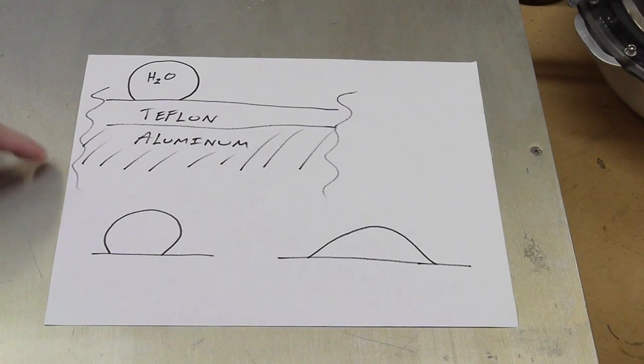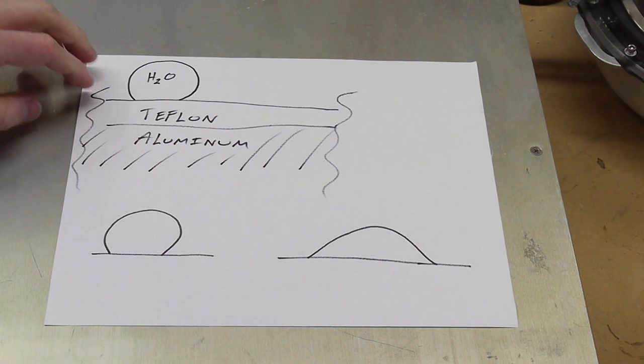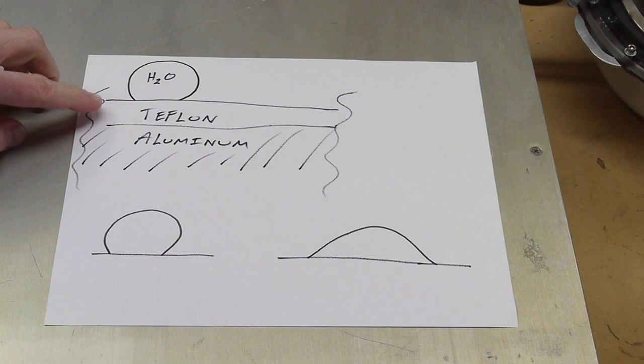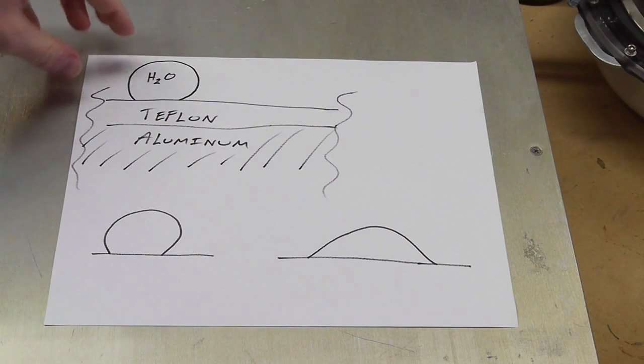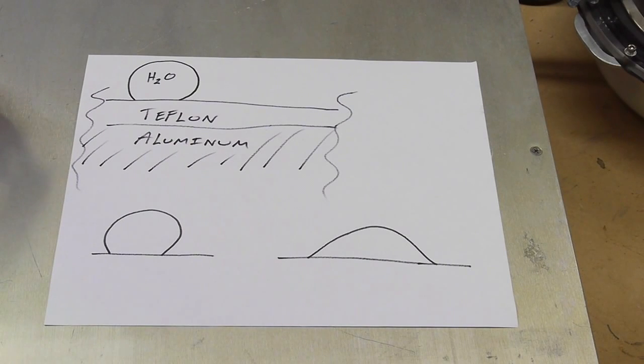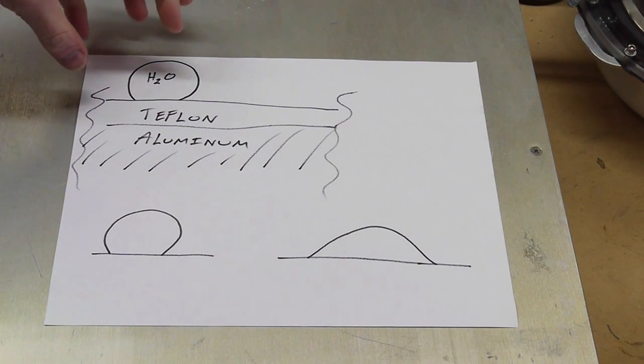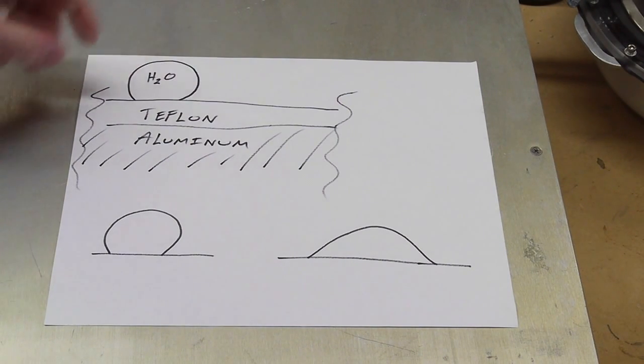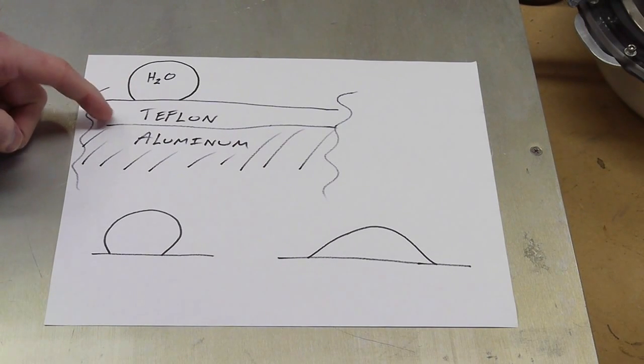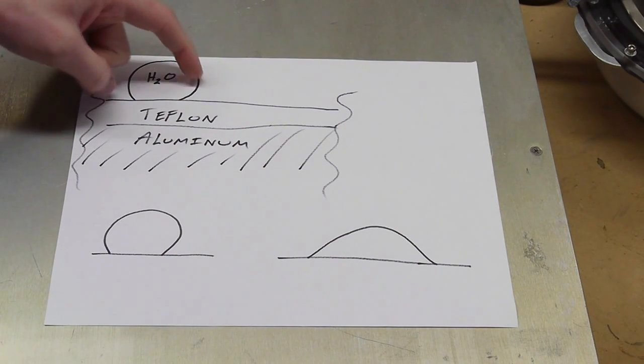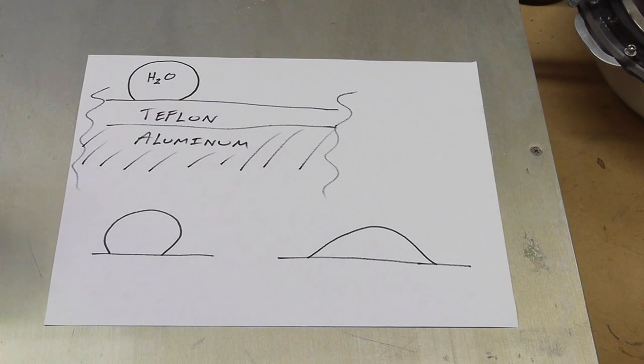Okay, so here's a cutaway view of what we're looking at. So here's the aluminum base plate, then there's a thin layer of Teflon, and then there's a water droplet on top of the Teflon. So normally the surface of the Teflon here is hydrophobic, meaning that the water molecules are not very attracted chemically to the surface of it. So what happens is the water much more preferentially clumps to itself than clumps to the Teflon surface, and we end up with this water beading up.